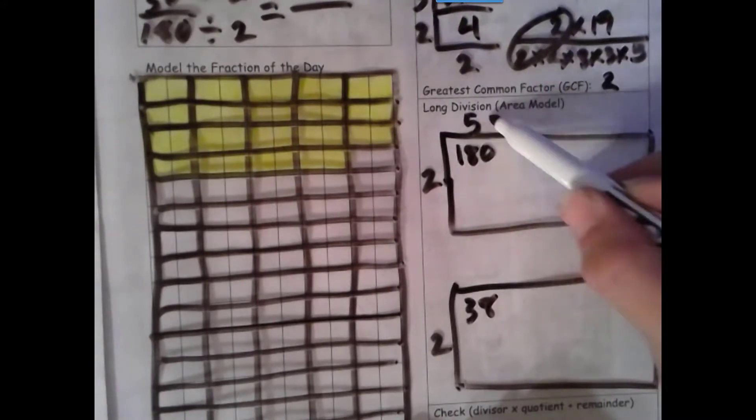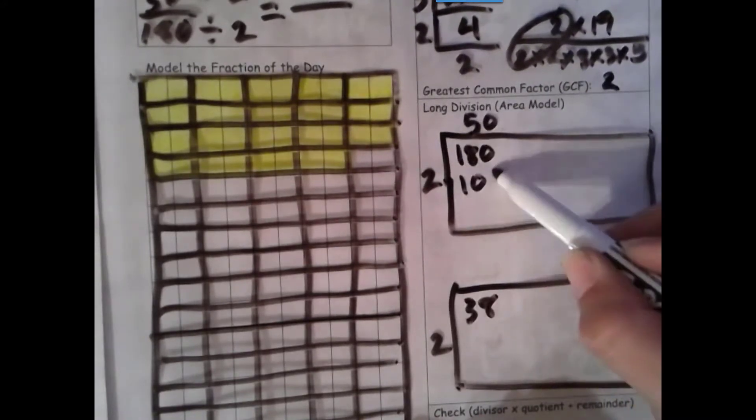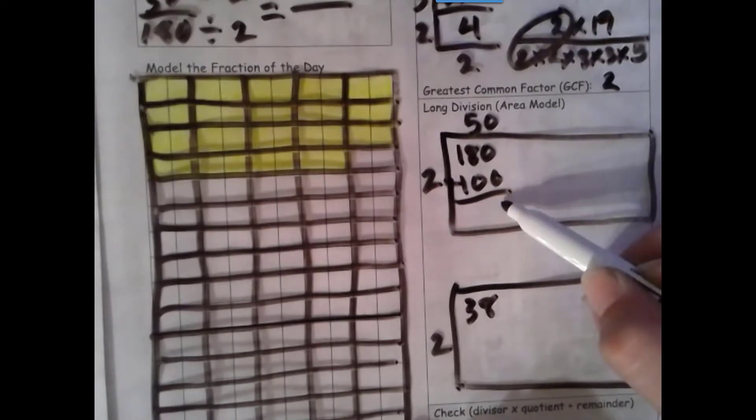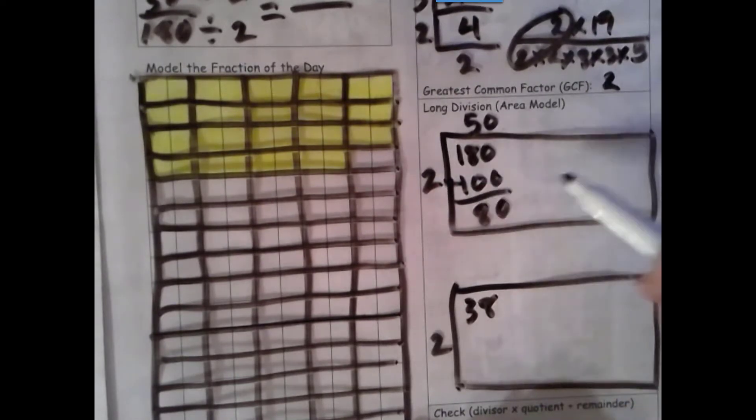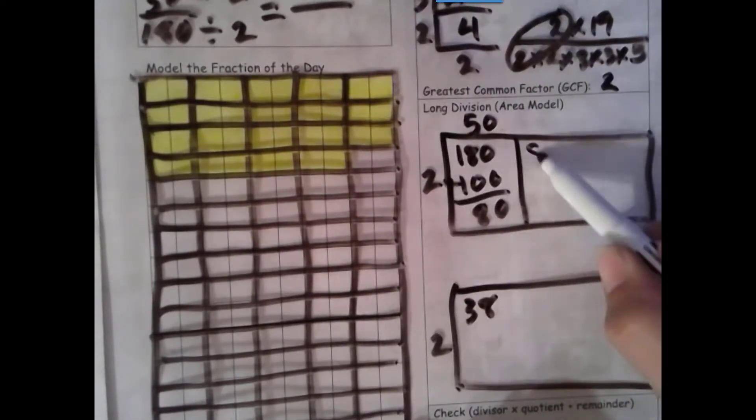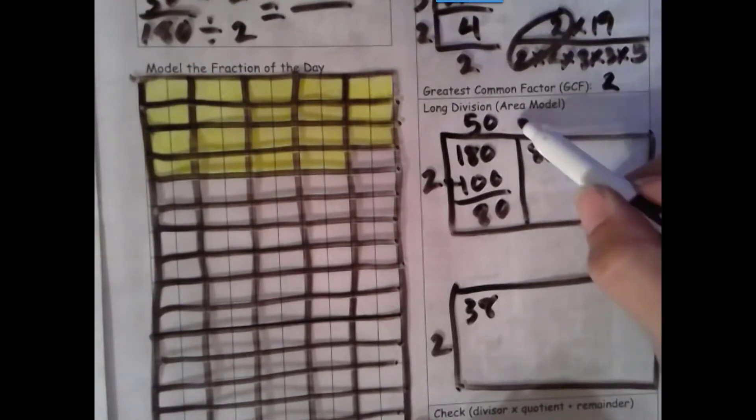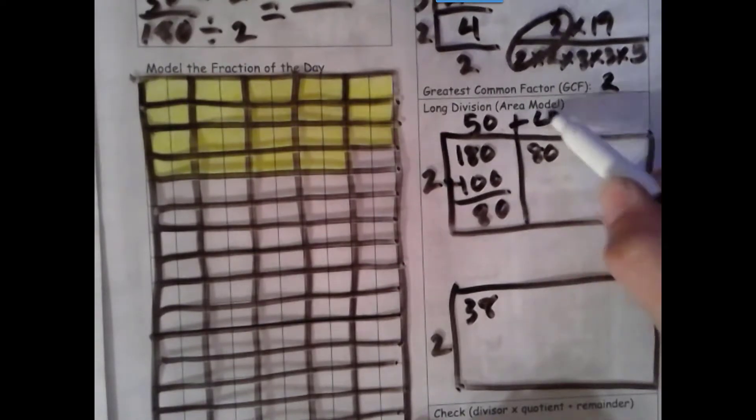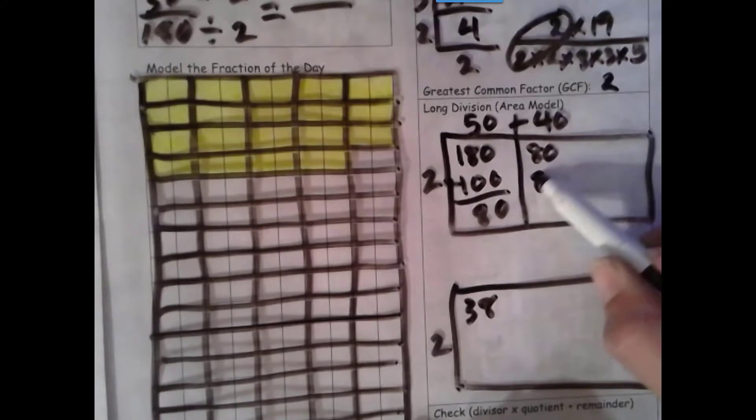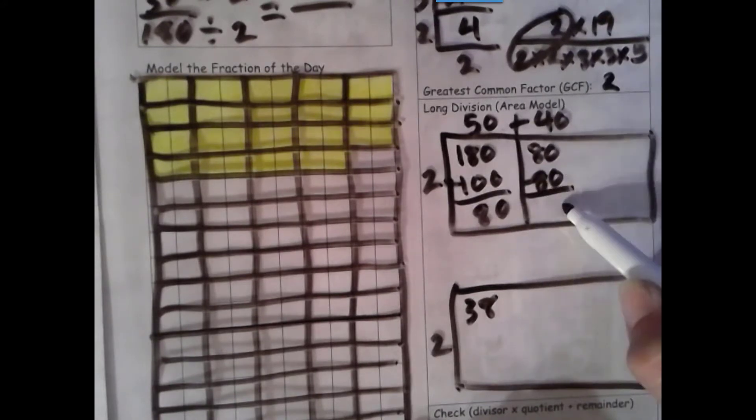Let's see, 2 times 50 gives me 100. Number's the same, zero's the game. More on top, no need to stop. Number's the same, zero's the game. And then 40 times 2 gives me 80. Number's the same, zero's the game. 50 plus 40 is 90.